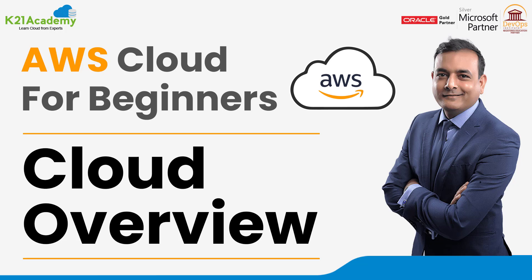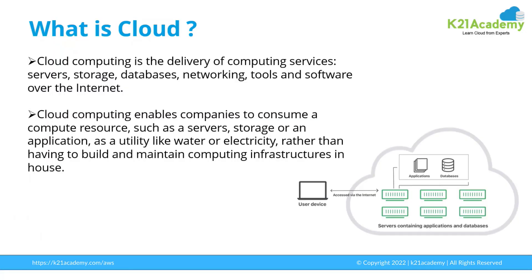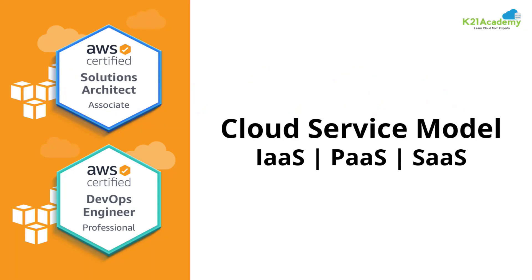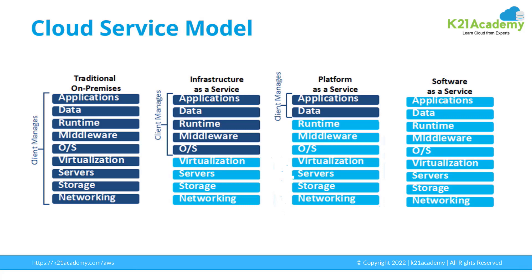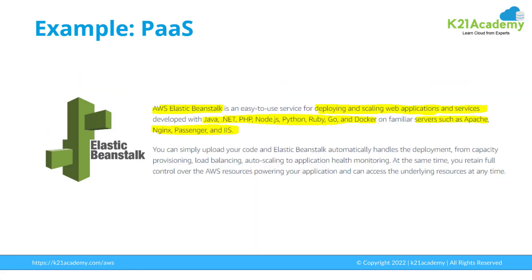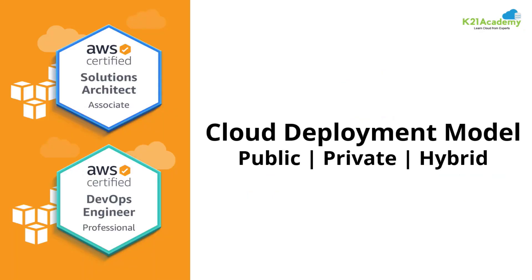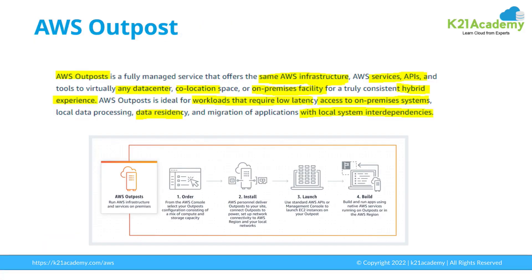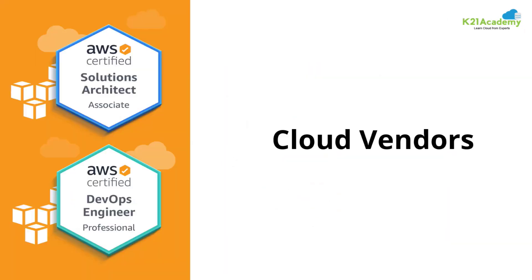Let me set the scene for what to expect today. There'll be three lessons. The first lesson covers cloud overview, where I'll tell you what the cloud means from a beginner's point of view. In lesson two, we'll go over the cloud service models — Infrastructure as a Service, Platform as a Service, and Software as a Service — with examples of each. We'll also look at cloud deployment models: public cloud, private cloud, and hybrid cloud, including AWS Outpost as an example of private cloud.